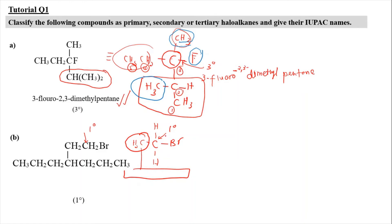As for the naming, first we need to find the longest carbon chain — carbon chain paling panjang. Starting from one end: one, two, three, four. Now we can go up or go straight. If I go up, I only get six carbons in the chain. However, if I go straight, I'll get five, six, seven. So I know that the longest carbon chain is going to be here, giving seven carbons.